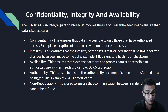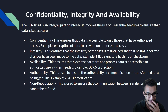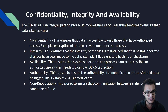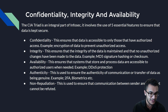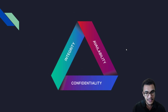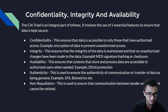This is something I've explained before on the channel, but I'll go over it one more time and its relation to data and penetration testing. The CIA triad is an integral part of infosec and it involves five essential security features to ensure that data is kept secure. The three we're dealing with primarily are confidentiality, integrity, and availability.